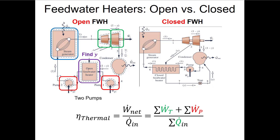Or maybe, like in the example from last class, we'll be given something like the net power of the cycle, or the net power per unit mass flowing through the system, and we can use that to find an expression for y so we can solve for that diverted mass flow rate.